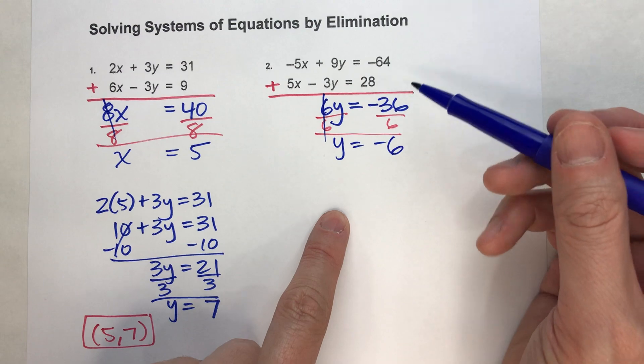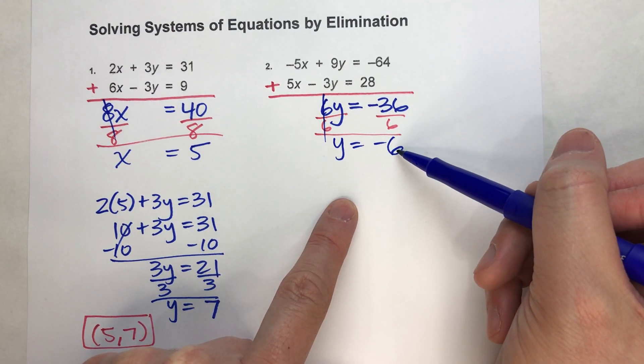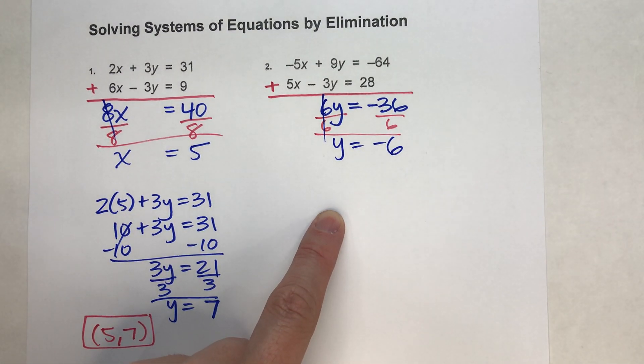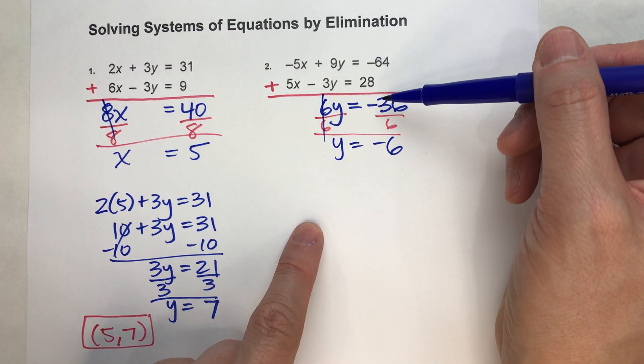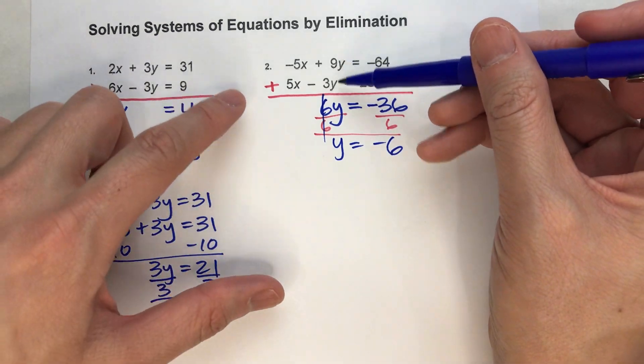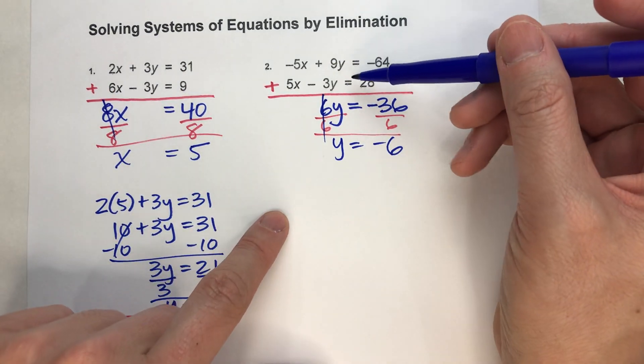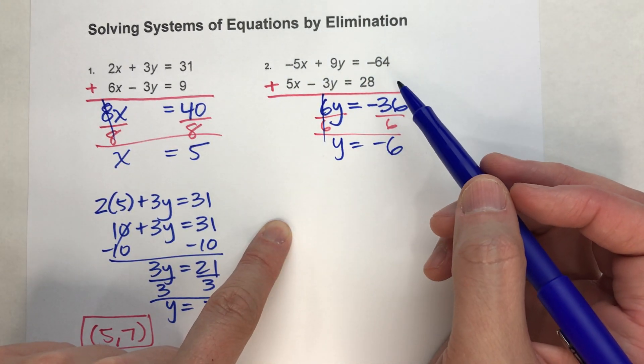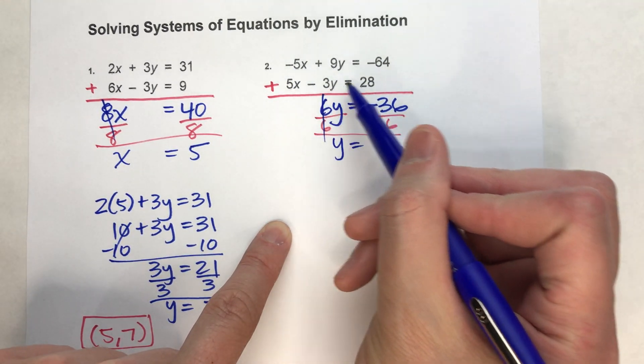Just like last time, now that I know one value, I can put it into one of the original equations and get the other one. I have a choice: the top one or the bottom one. I'd say they're both equally complicated. I'll pick the bottom one. It's a little less complicated with the negatives in there.